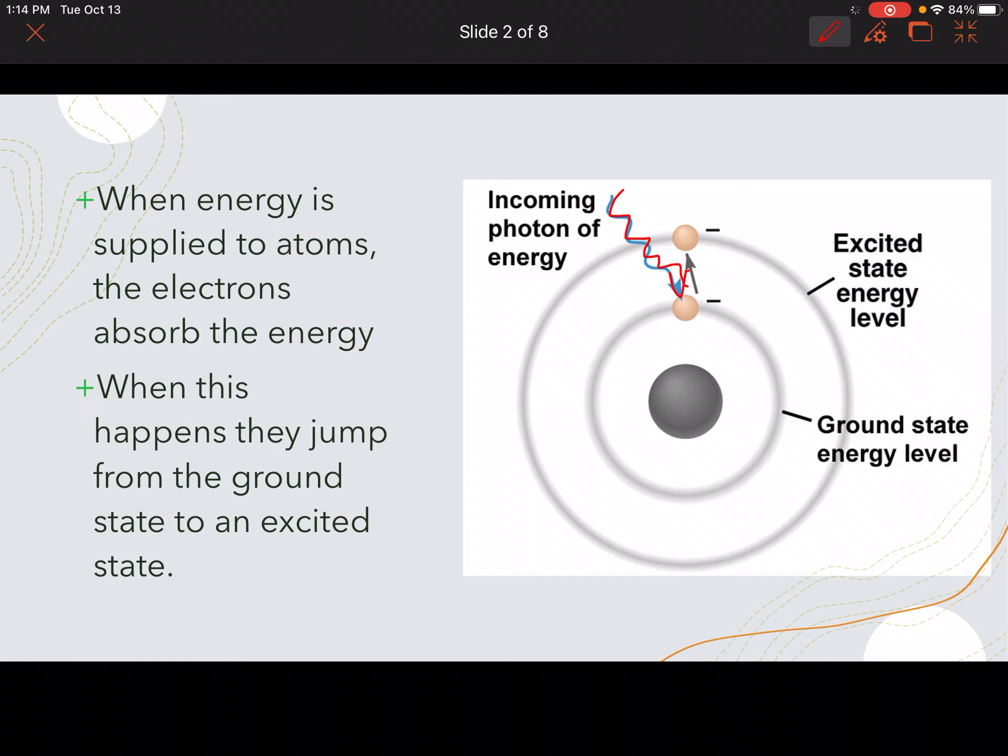Now when they absorb that, they jump from the ground state to what's called an excited state. Here it is in the ground state, and they're going to jump up to an excited state. And this is in a different energy level or different orbital.